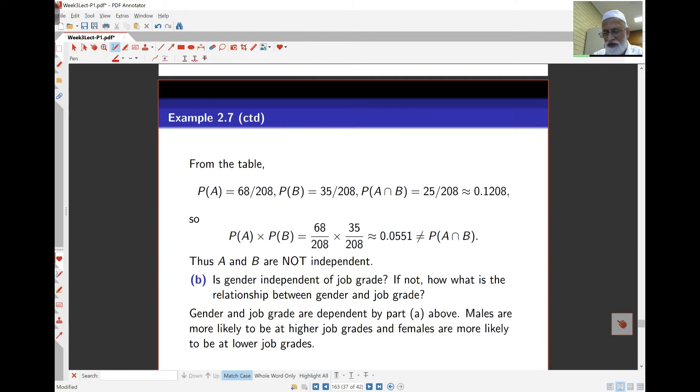Probability of A here works out to be 68 over 208. It's the maximum of counting. Probability of B here is 35 over 208. And probability of A intersect B is 25 over 208. So, if I look at probability of A times probability of B, it's not the same as probability of A intersect B. So, these two events aren't independent.